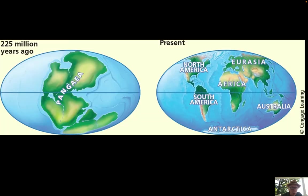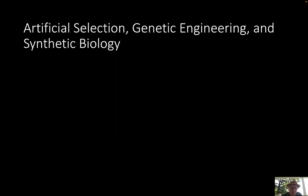Around 225 million years ago, all the continents were together as one landmass, and slowly they separated and formed into what we're familiar with today.